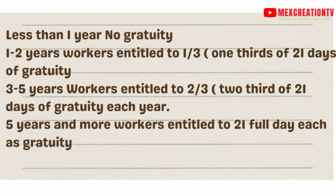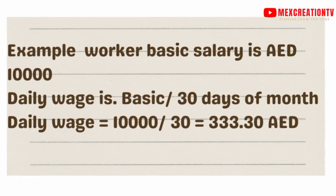For one to two years, you are entitled to one-third of 21 days of gratuity. For three to five years, you are entitled to two-thirds. Beyond five years, you are entitled to the full 21 days.